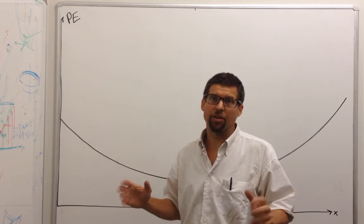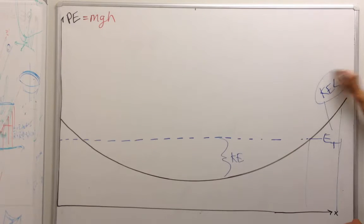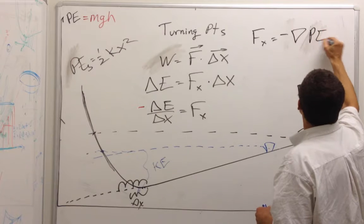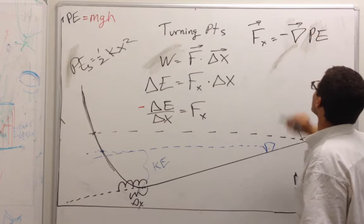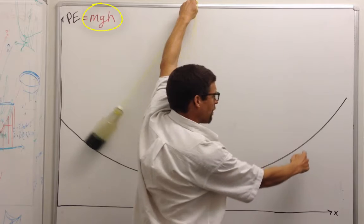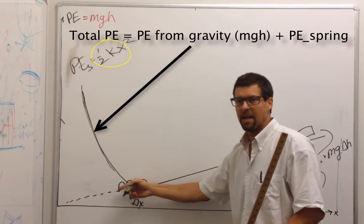Let's talk about potential energy graphs. Remember when we studied potential energy graphs, how we could graph the potential energy of a system as a function of displacement, and how the force on that system was the negative gradient of the potential energy. We explored how potential energy can be a function of elevation, mgh, or compression in a spring, one-half kx squared.